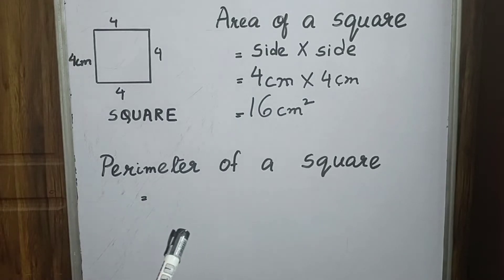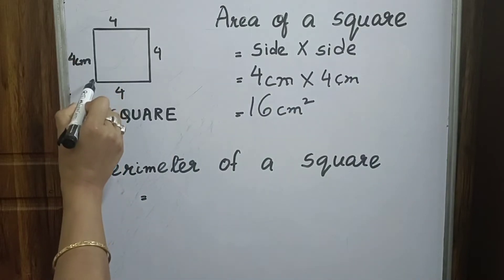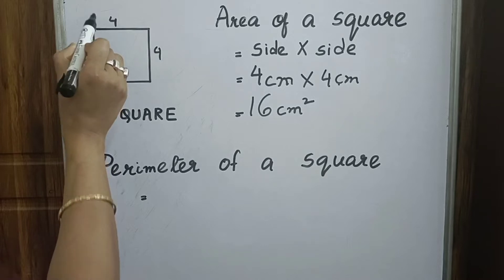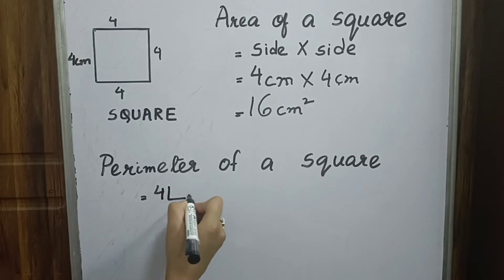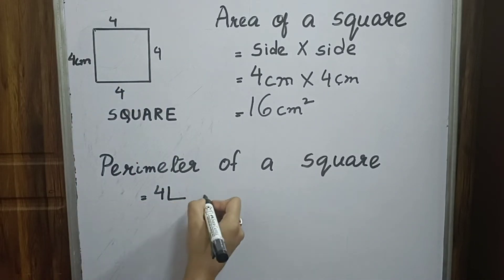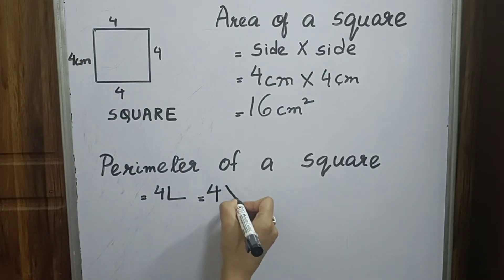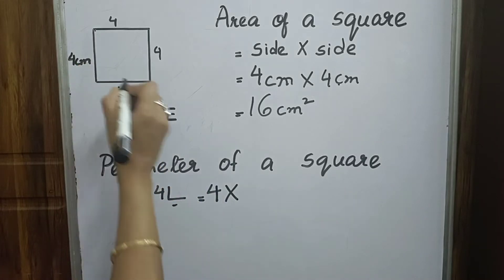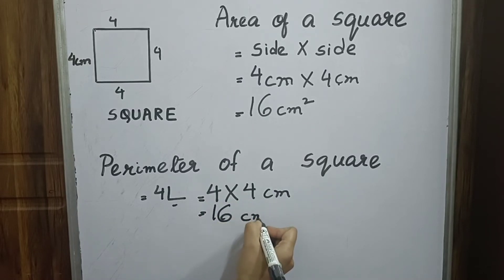Now we will find out the perimeter of a square. The perimeter of a square is side plus side plus side plus side, which is the sum of all 4 sides, written as 4 into the length of 1 side. So if one side is 4 cm, then the perimeter is 4 × 4 cm, which equals 16 cm.